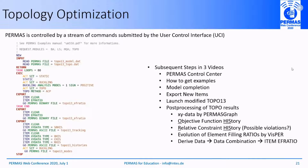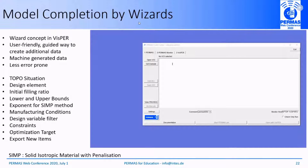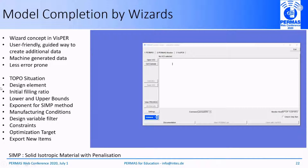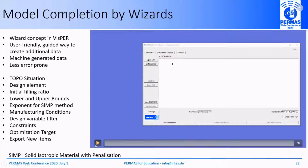The first video is about model completion by wizards. The wizard concept in VISPA is a user-friendly guided way to create additional data. These data are machine-generated, meaning they are less error-prone. I will show how to create a topology situation, a design element, define an initial filling ratio in the topo wizard, define lower and upper bounds for the filling ratio, set an exponent for the SIMP method used in PERMAS topology optimization, introduce manufacturing conditions like design variable filters, define constraints and the optimization target, and finally export new items.